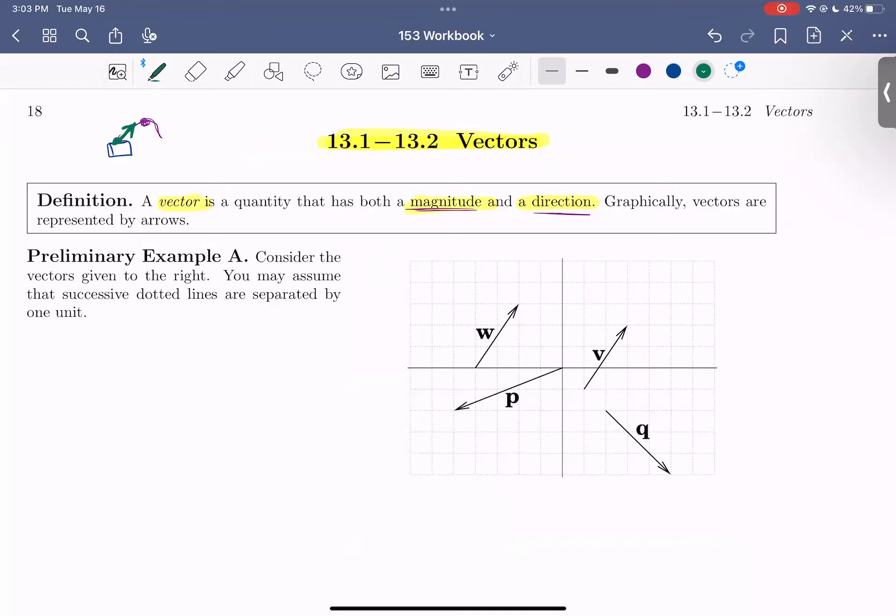We also see vectors when we're talking about modeling in the weather or the atmosphere, where we're talking about maybe the wind speed and the direction. So the magnitude or length of the vector could represent the speed of the wind and the direction where that arrow or vector is pointing to represents where the wind is pointing.